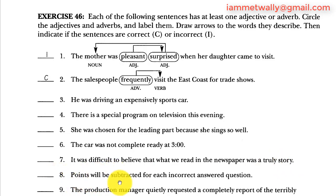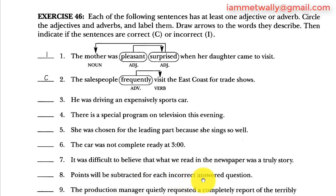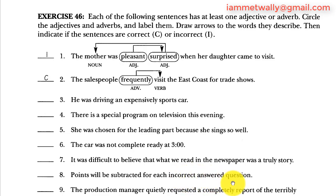Number eight: 'Points will be subtracted for each incorrect answered question.' Points is the subject, will be subtracted is the passive verb. Incorrect is an adjective describing answered, which is already another adjective, and answered describes question. But this is wrong because incorrect should be an adverb — it should be incorrectly, because an adverb can describe an adjective while an adjective describes a noun. So number eight is incorrect.